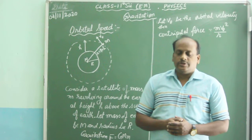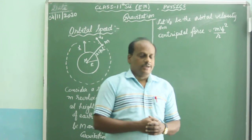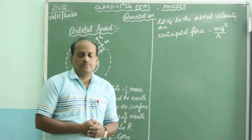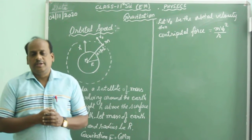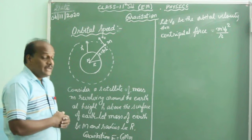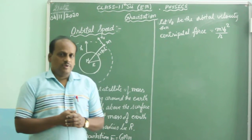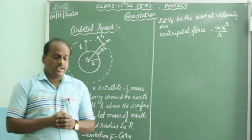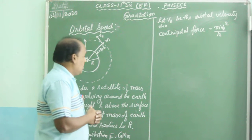Hello everybody. Today's topic for Class 11th Science English module is gravitation, and in gravitation we will study about the orbital speed of a satellite. We have to find the expression for orbital speed of a satellite, and today we have to derive that expression.